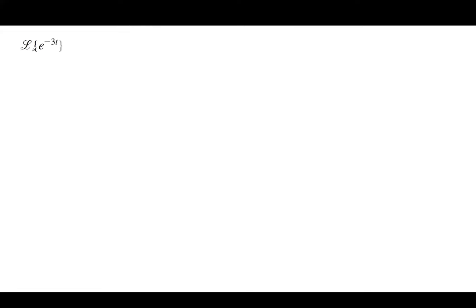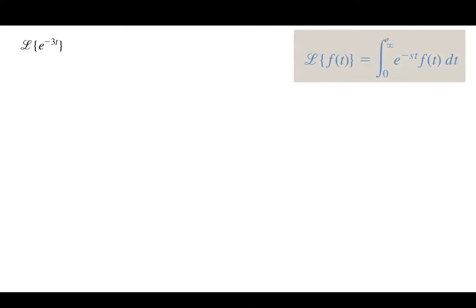Let's take a look at a few more examples here. Suppose our goal is to calculate the Laplace of e to the power negative 3t. Remember the definition of the Laplace transformation of function f — it's the improper integral from 0 to infinity. You copy down e to the power negative st and then copy down your function, whatever that is. So here our function is e to the power negative 3t.